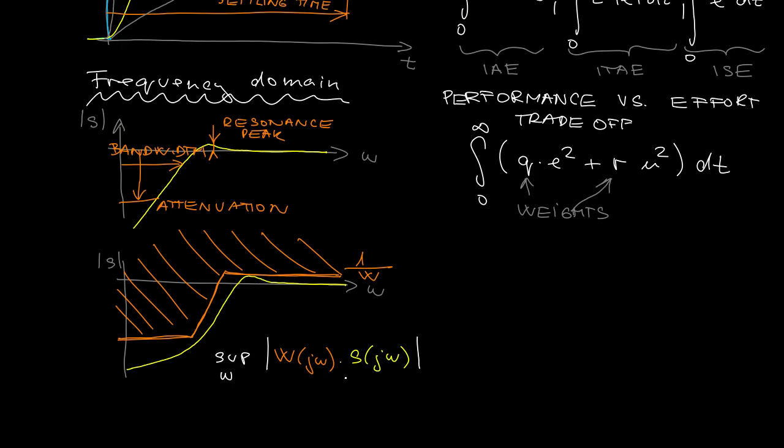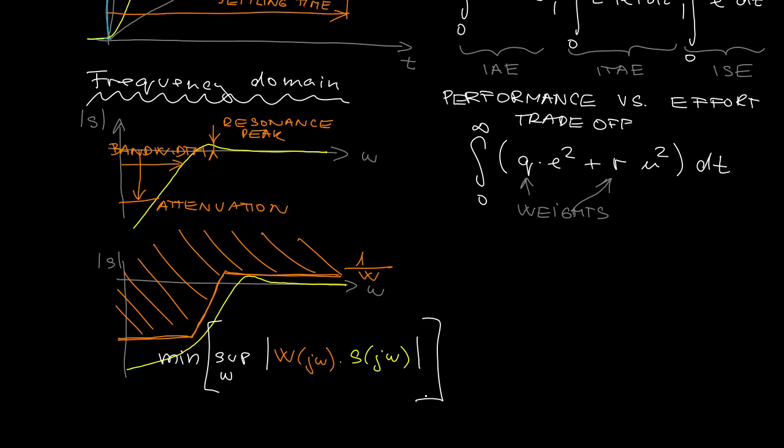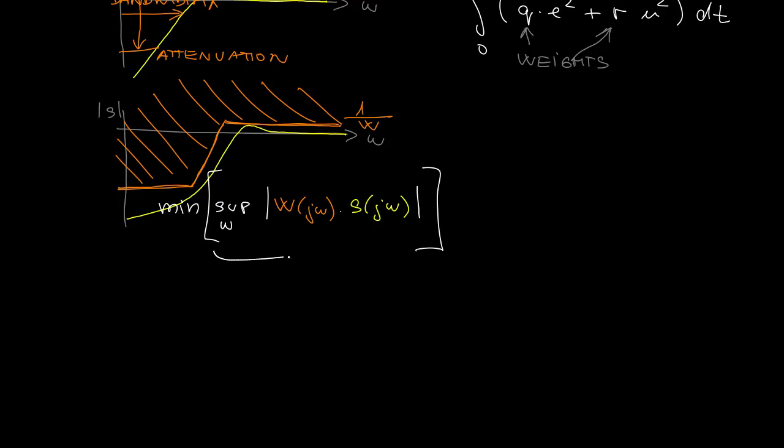You can verify that this visually depicted condition can be expressed as the condition that supremum over all frequencies from magnitude frequency response of W times S should be less than 1, which makes it a perfect candidate for minimization. This is compactly labeled as h-infinity norm of W times S.